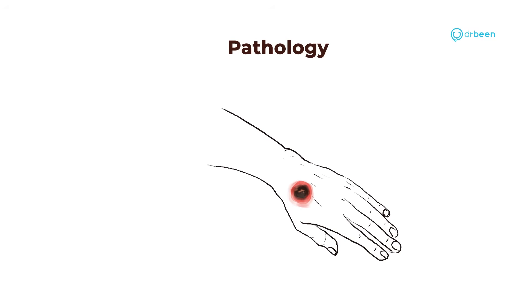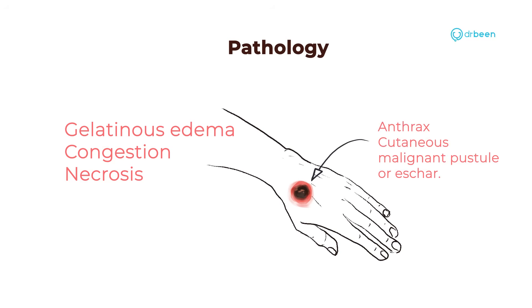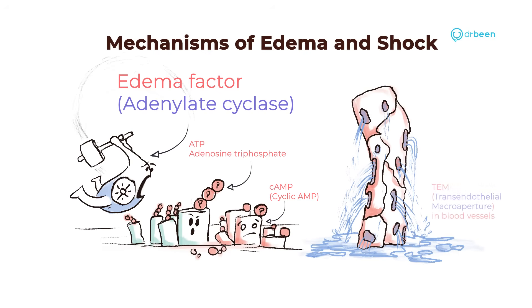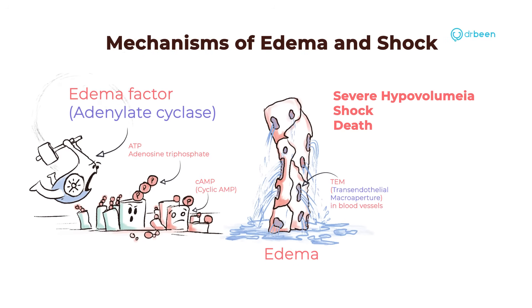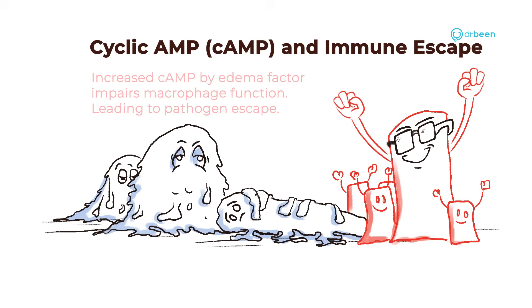Anthrax causes gelatinous edema, congestion, and in most cases leading to tissue death and necrosis. Bacillus anthracis produces edema factor, which is an adenylate cyclase enzyme that creates more cyclic AMP from ATP. This results in the production of transendothelial pores, causing fluids from blood vessels to spill into the tissue — causing edema. If this pathology becomes severe, lack of fluids in the vessels will result in shock and death. Cyclic AMP also severely imbalances intracellular signaling pathways, impairing macrophage function and allowing the pathogen to evade the immune system.